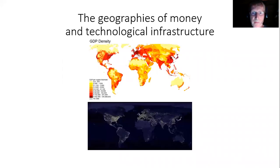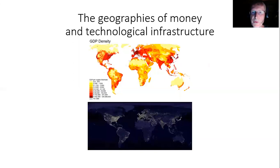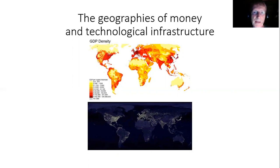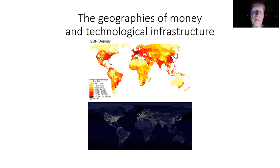I'd like you to begin by looking at these images. The top map shows the global distribution of money basically. It's a map of GDP density showing how much money is made per square kilometer. And as you can see, the darkest areas, the crimson areas, are the areas where most money is made.